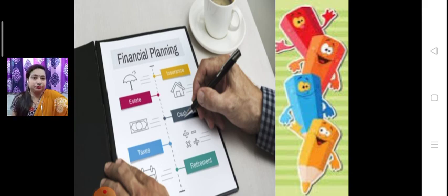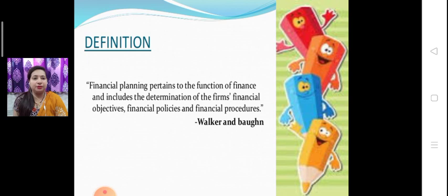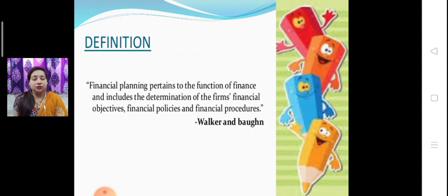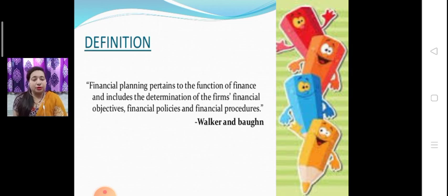Definition: Financial planning pertains to the function of finance and includes the determination of the firm's financial objectives, financial policies, and financial procedures. The main aim of financial planning is to think about the sources and objectives of enhancing money, making available money when needed, so that we follow financial policies and procedures to achieve our objectives. Financial planning makes the cash flow position of a company stable always.